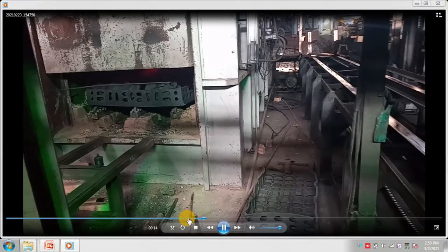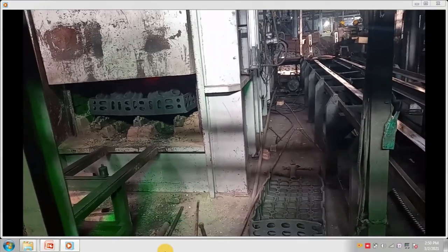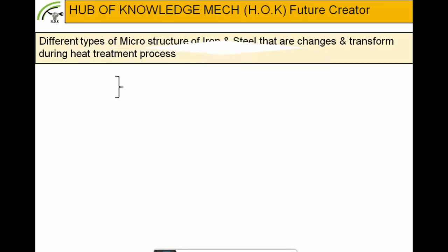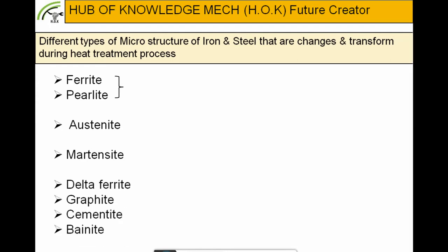Material is removed from the furnace after the annealing process. Different types of microstructures in iron steels change and transform during the heat treatment process. These include: ferrite and pearlite, austenite, martensite, delta ferrite, ferrite, and cementite.